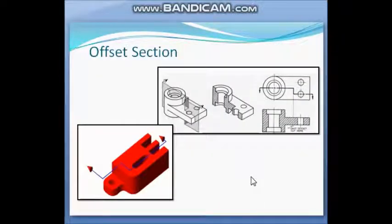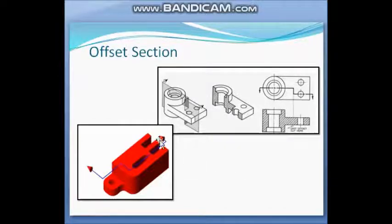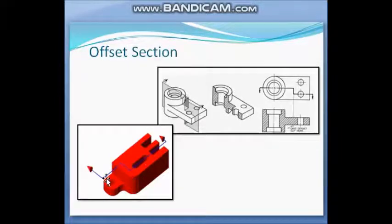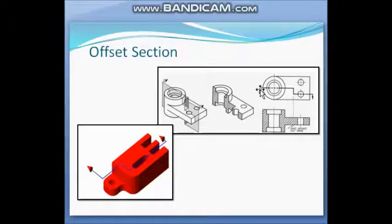Next is offset section. Offset section is a combination of two, three, or more planes, and all the planes are at 90 degrees to each other. This is an object with one, two, three, and four section planes — a combination of four section planes. In the offset section, all the offset lines are at 90 degrees with each other.